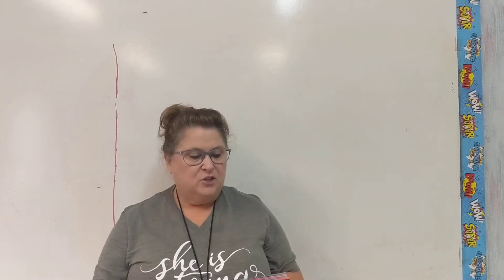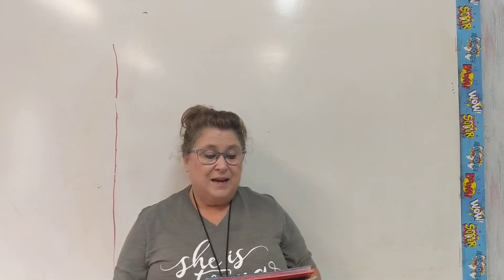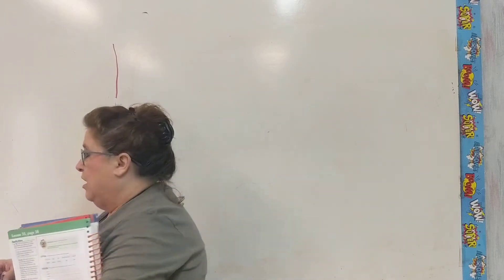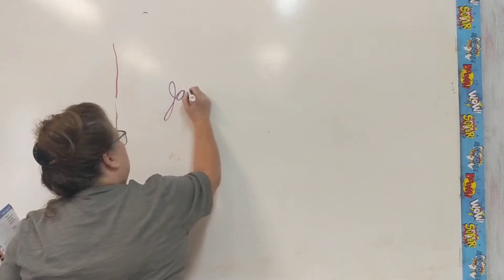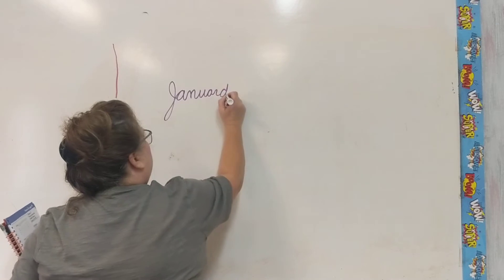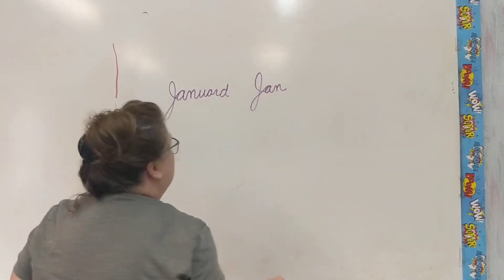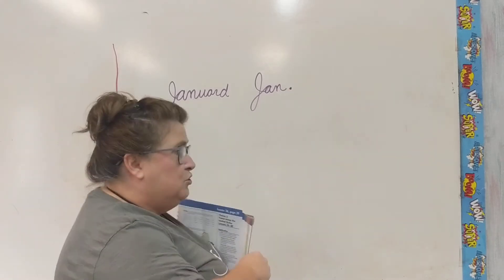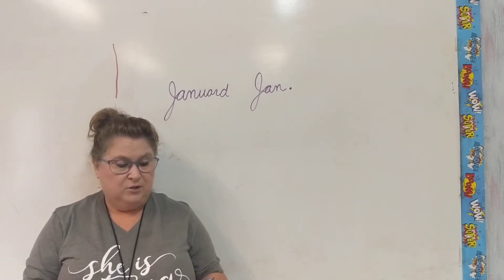All right, so at the top of page 39, you're going to draw a line from the month to its abbreviation. Place a period at the end of each abbreviation. Remember that some months do not have abbreviations. But remember, here is January — when we abbreviate January, it is not just J-A-N. The abbreviation is J-A-N period. So be sure and place your periods after your abbreviations, or they will not be correct.